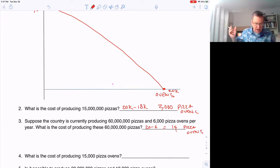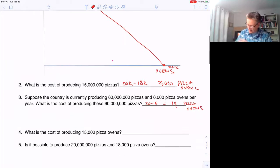And in number four, what's the cost of producing 15,000 pizza ovens? Well, it would be 75 minus 30,000 pizzas, which is 45 million pizzas.